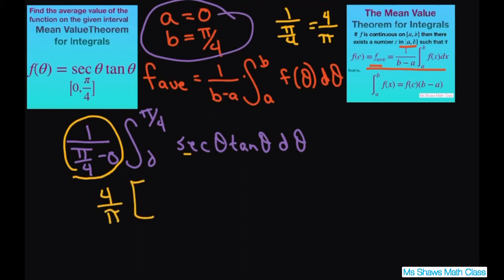And the antiderivative of secant theta tan theta is secant theta. And we're evaluating from 0 to pi divided by 4.